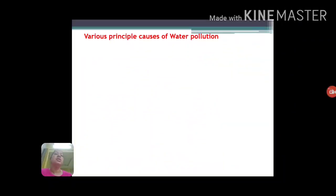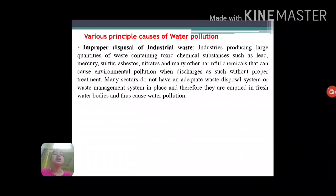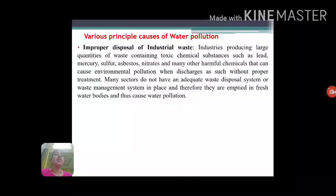Let's start with causes of water pollution. The first cause is improper disposal of industrial waste. Different kinds of industries like chemical, pharmaceutical, and textile industries produce waste that may contain toxic chemicals and heavy metals, which are highly hazardous for human and other organisms' health. When such waste is discharged into water bodies without prior treatment, it leads to water pollution, especially in regions with no proper waste management system.